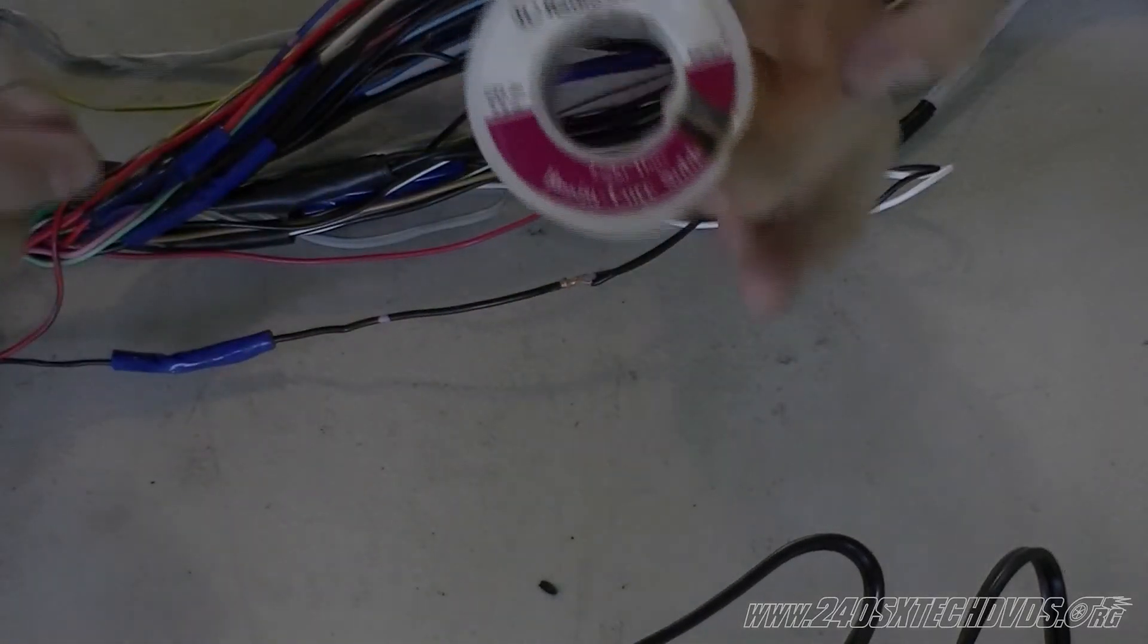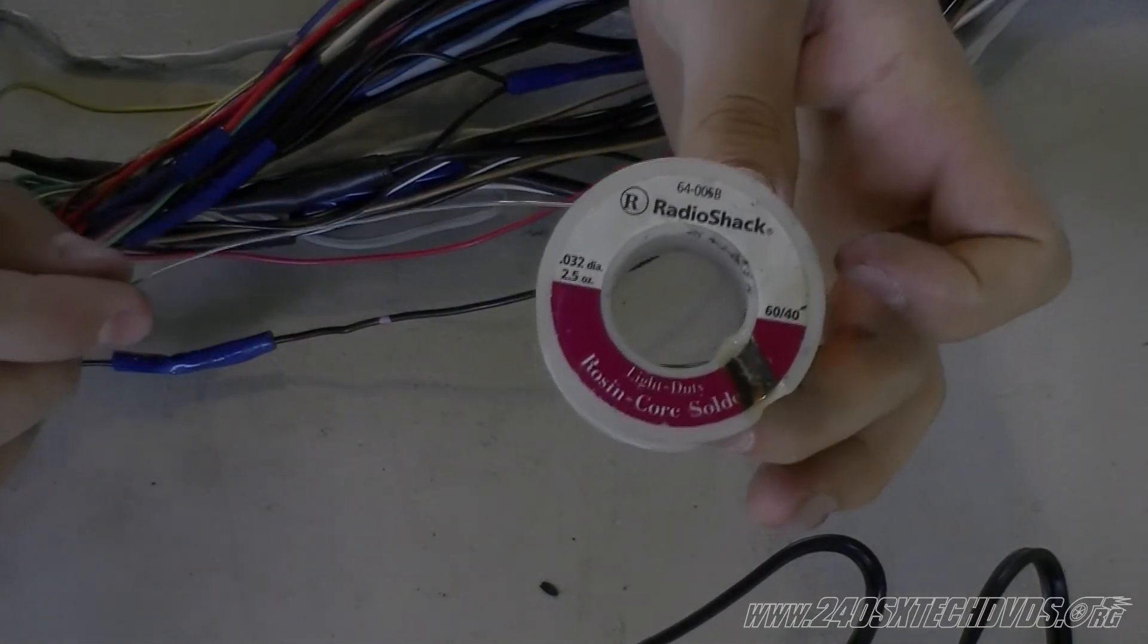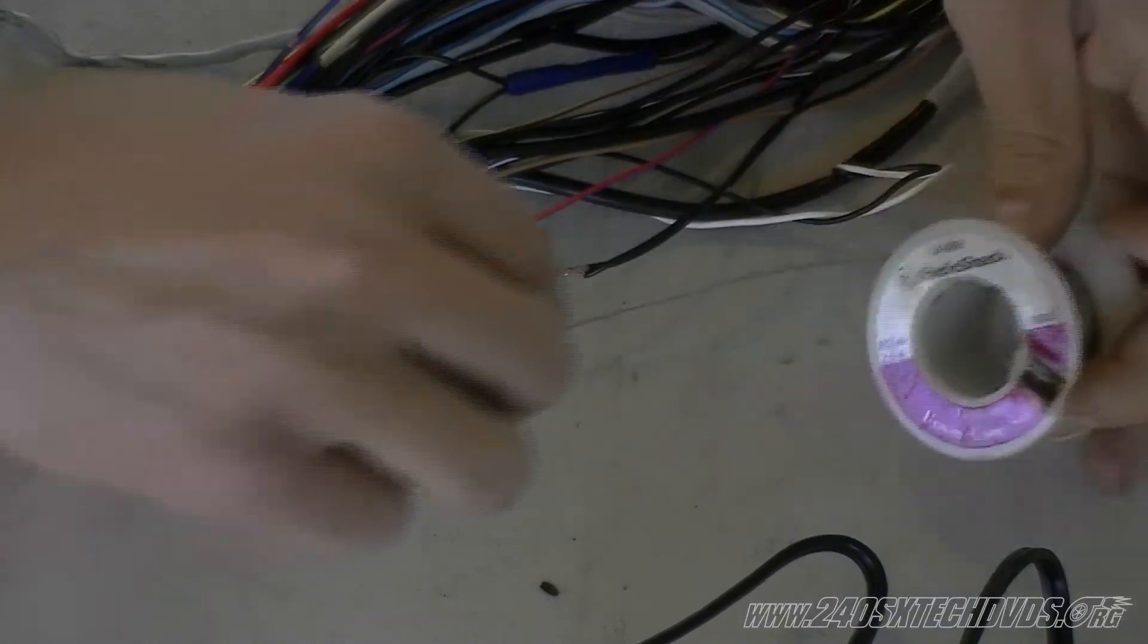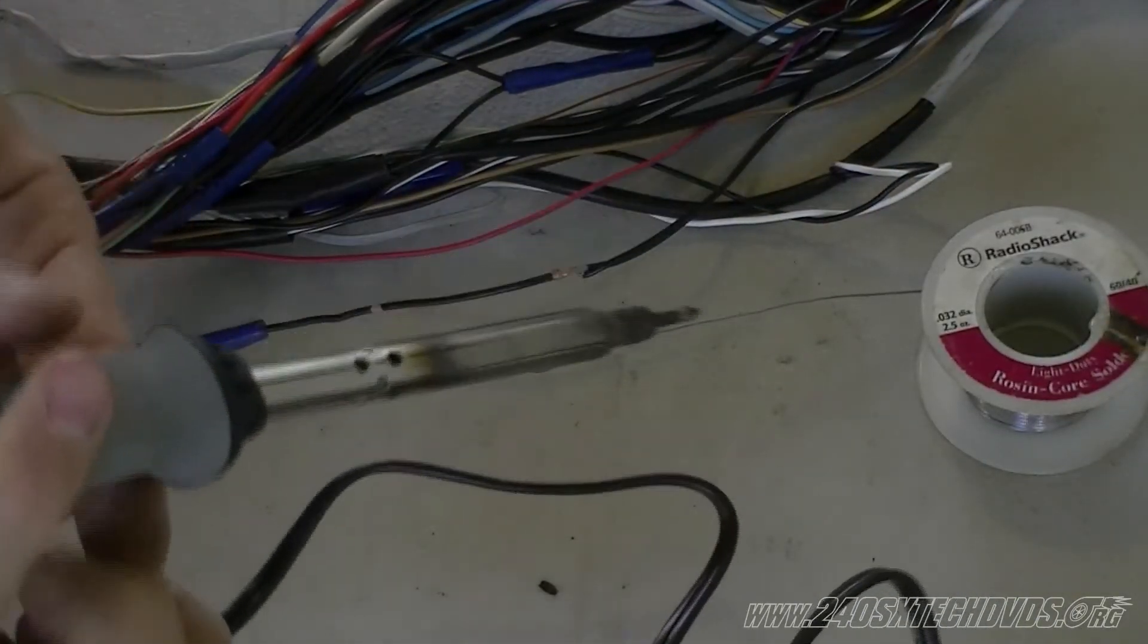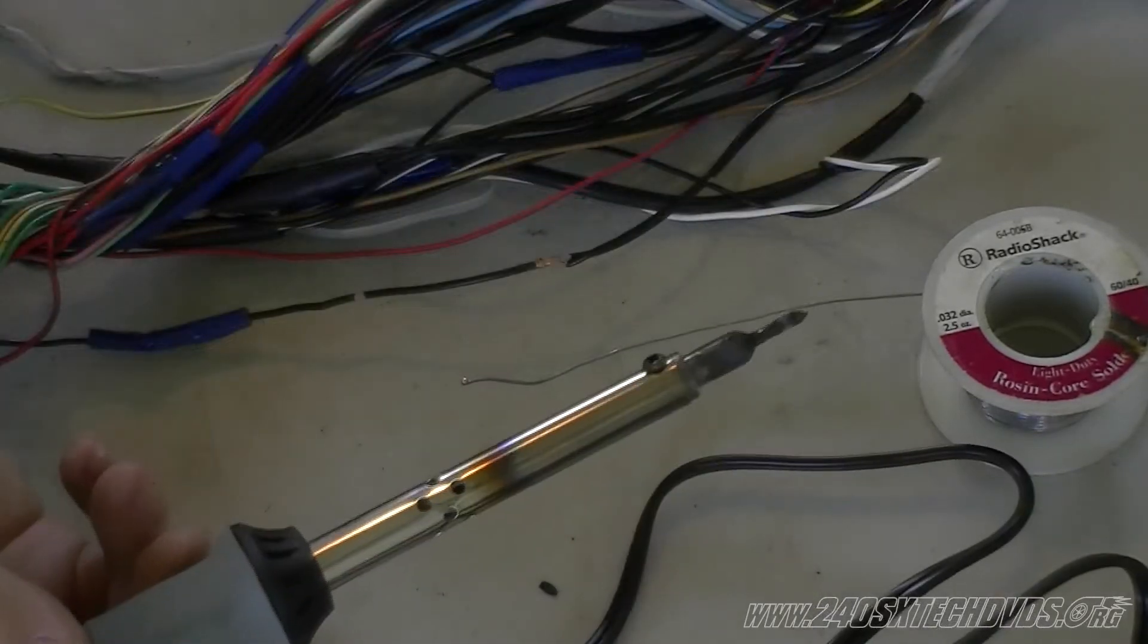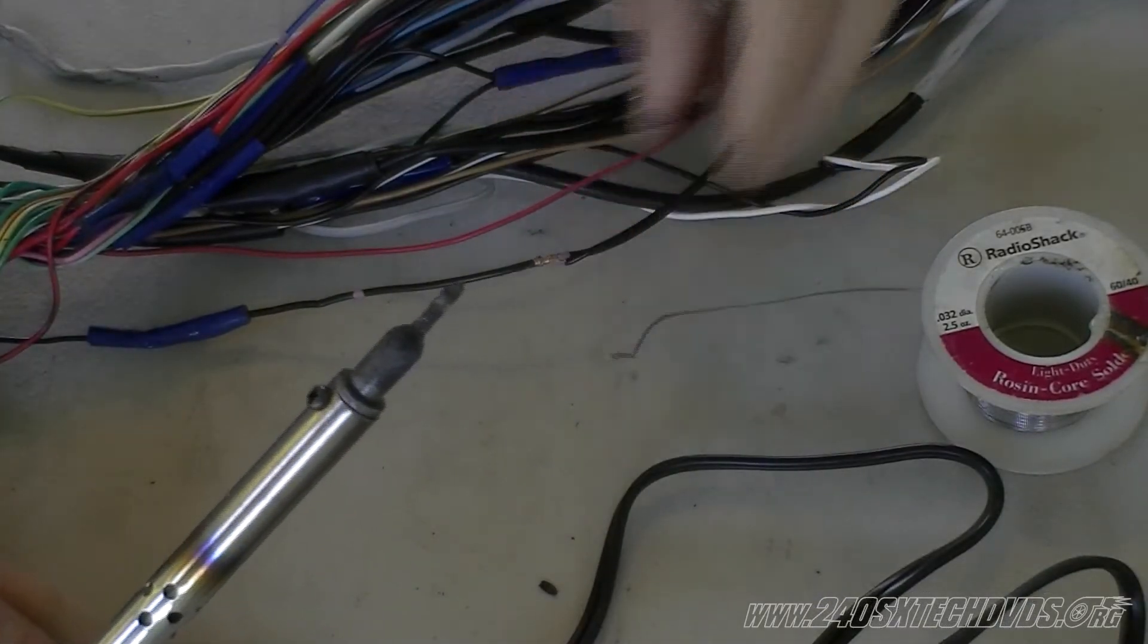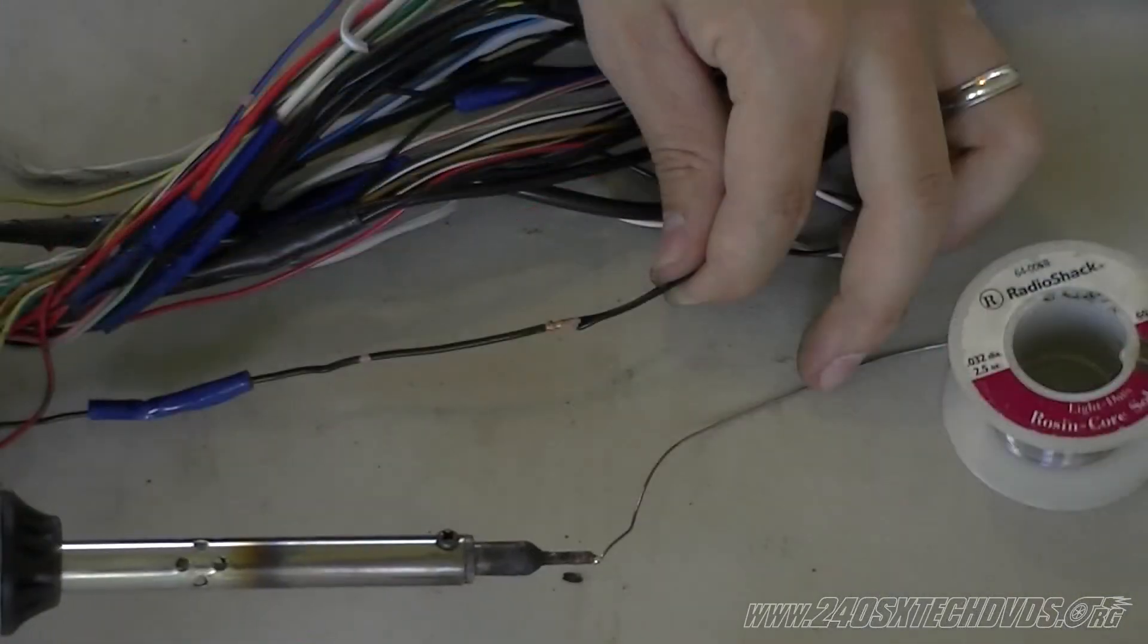As far as the solder I'm using, I'm using Radio Shack .032 diameter. It's light duty. I'm just using a pin type. It's switchable from 20 watts to 40 watts. 20 watts is all you need to do wiring like this. Just pick some solder up with your gun.